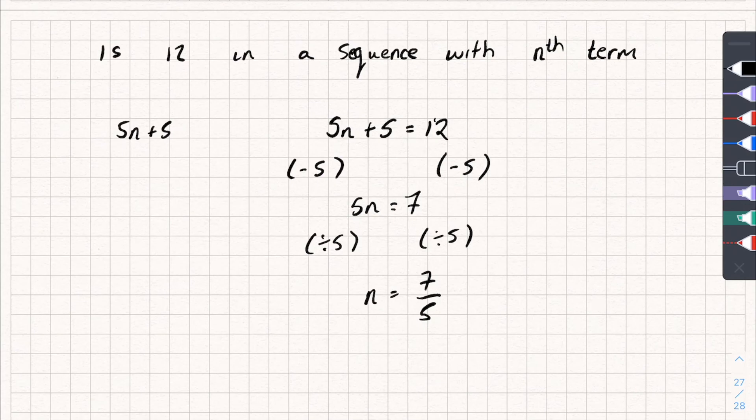Now, 7 over 5 is a fraction. Hopefully, you can see that's not a whole number. I mean, we could write it as a decimal. It would be 1.4. So 12 is not in our sequence with nth term 5n plus 5, because there is no integer value we can substitute in to get 12.